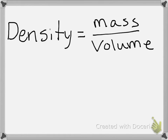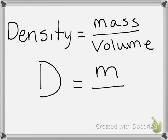The formula we use for density is density equals mass over volume. Once we have that formula, we can assign some letters: density is a capital D, mass is a lowercase M, and volume is a V.